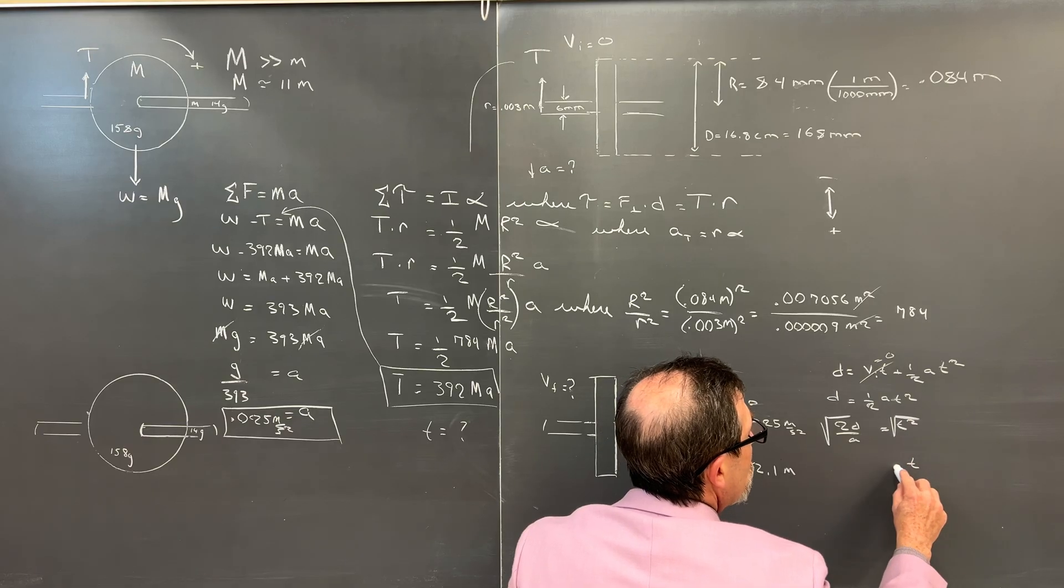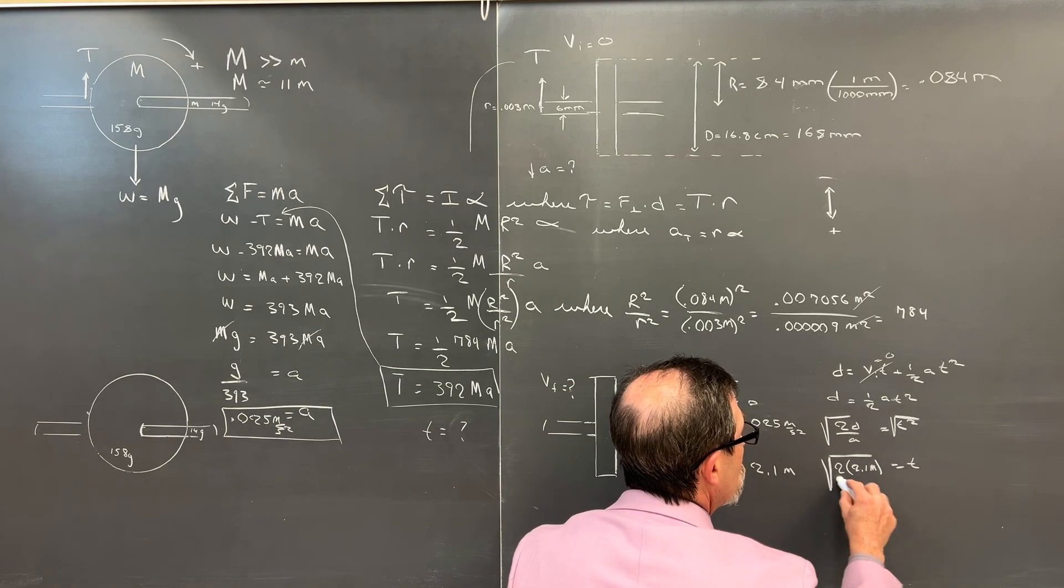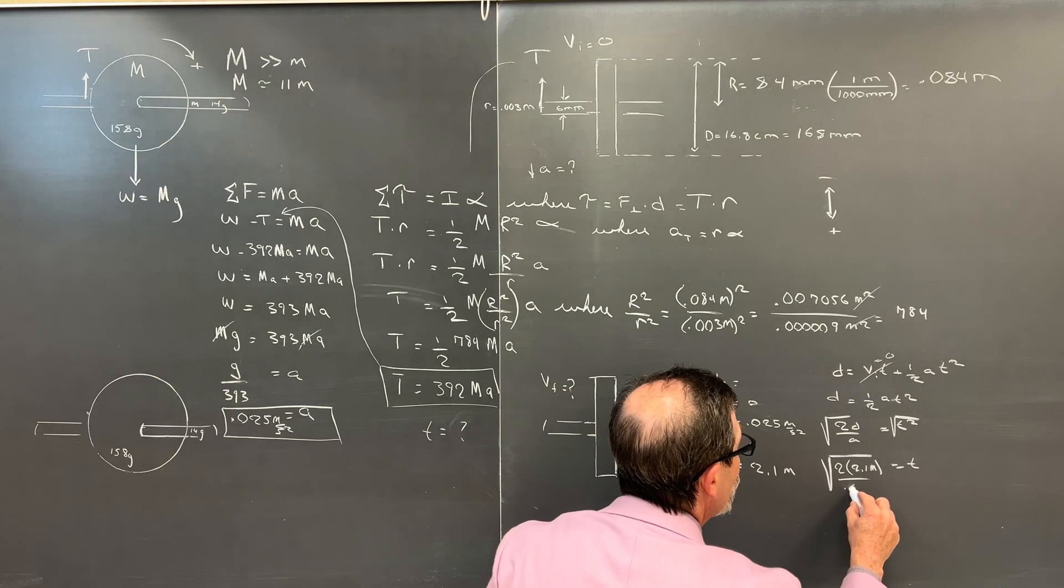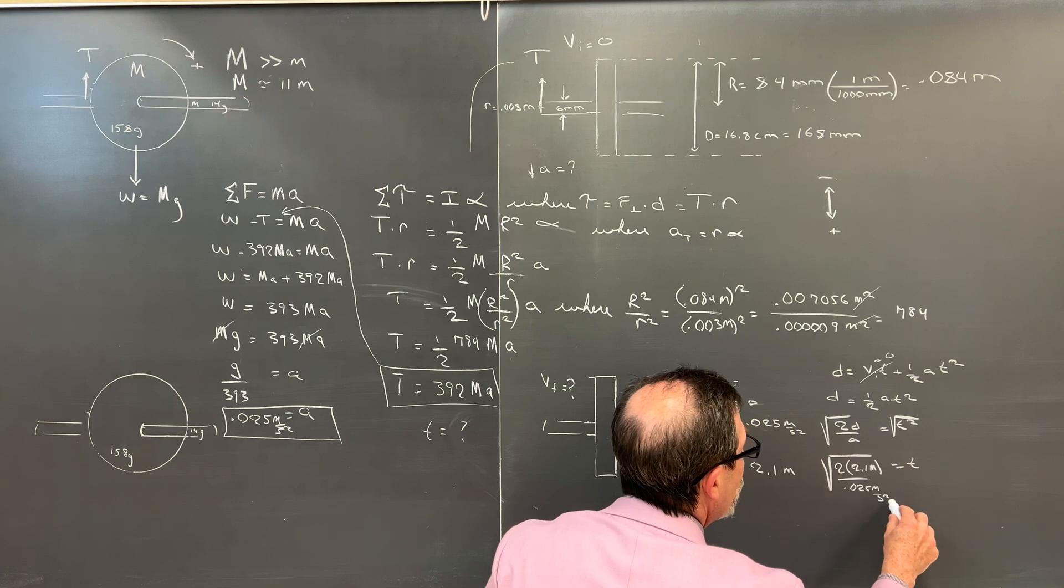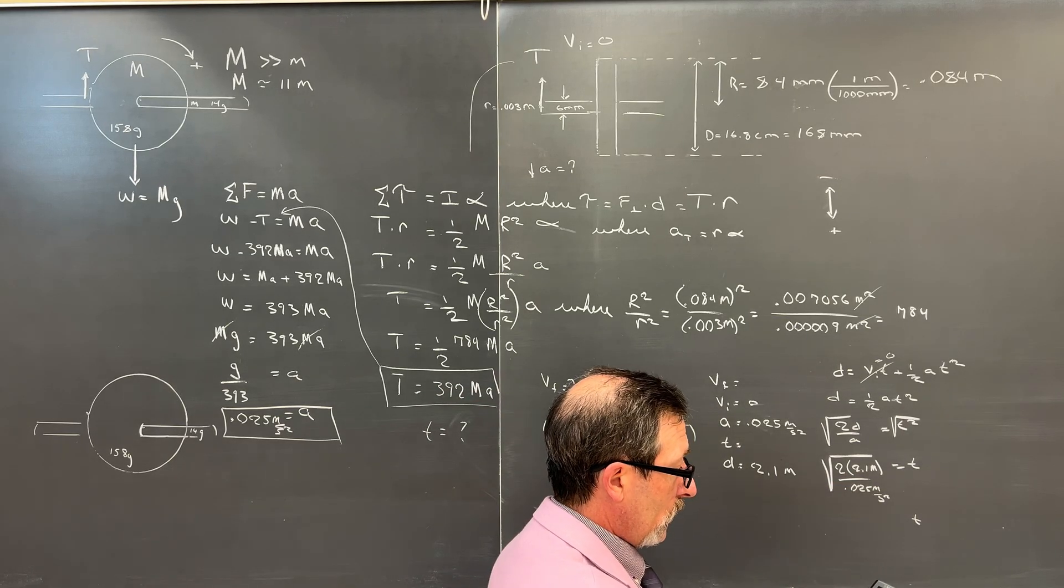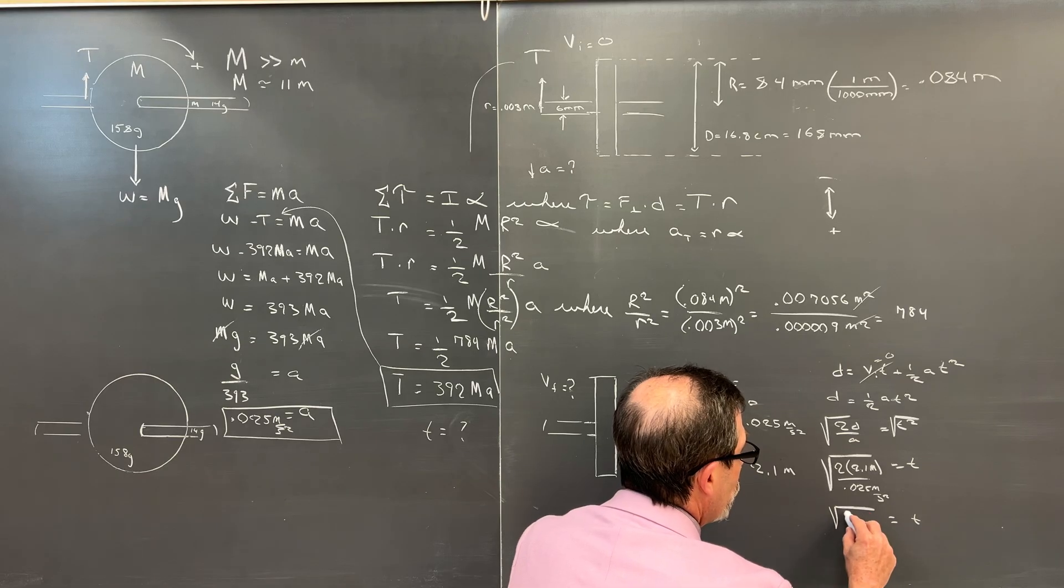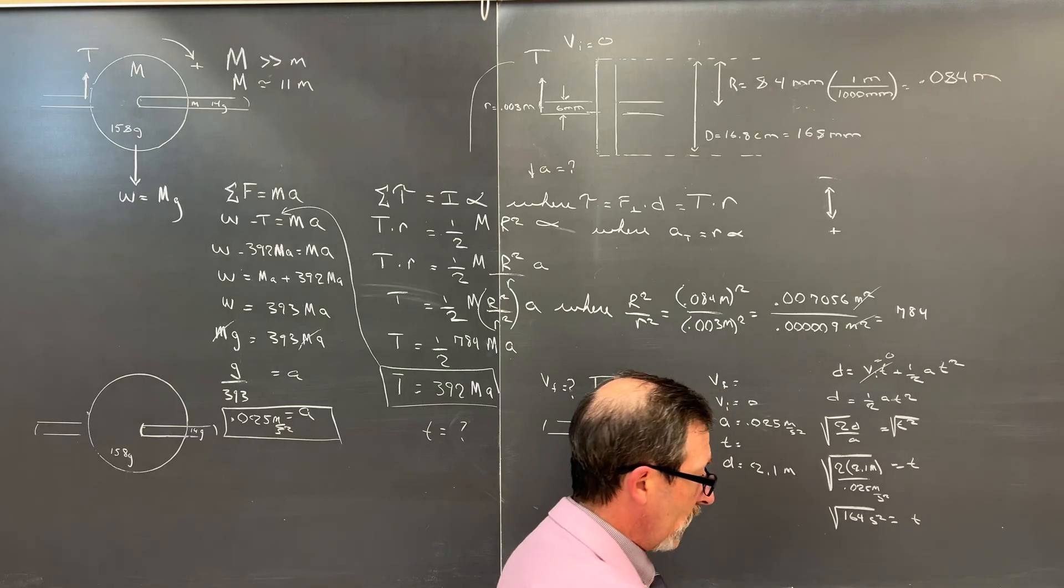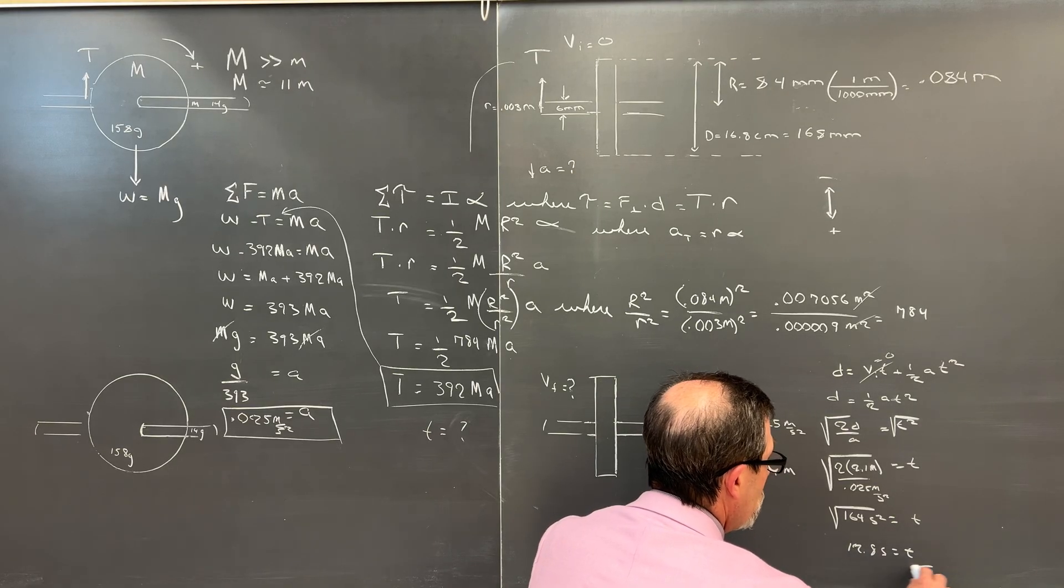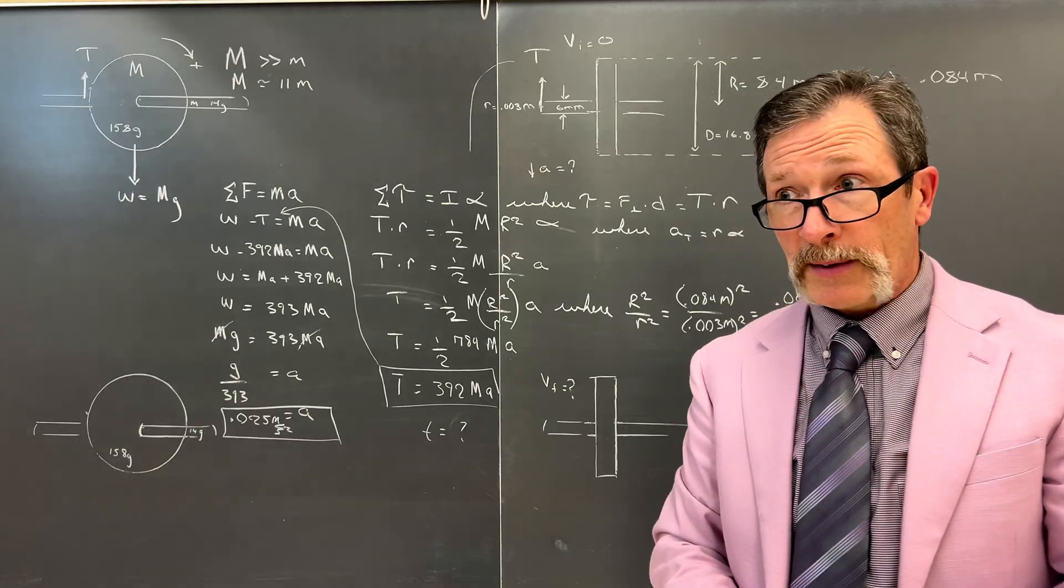T equals the square root of two times our distance of 2.1 meters divided by our very, very slow acceleration. And we saw that it was incredibly slow. 0.025 meters per second squared. Let's see what I'm getting. Let me grab my calculator. This is going to be 4.2 divided by 0.025. And that would be 168. And that would be seconds squared. Hopefully this is still picking it up. And then when I square root that, I get 12.8. 12.8 seconds. Time equals 12.8 seconds. That is incredibly good correspondence between our theoretical and our experimental. I did not think it would be that close. And here's why.